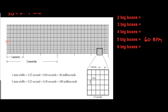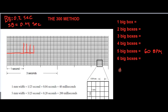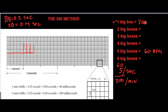What would it be if a QRS occurred at every single big box? That means they're happening every 0.2 seconds, which is five times per second. With 60 seconds in a minute, that's 300 times per minute. So if the QRS complexes are consistently one box apart, the heart rate is 300 beats per minute.